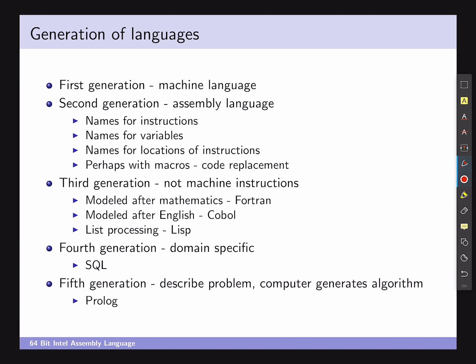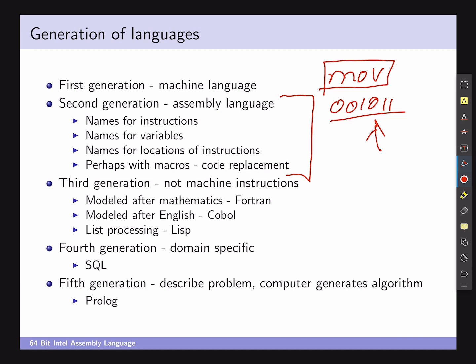So where does assembler programming fit into the generation of programming languages? Assembler language is referred to as the second generation of programming languages — basically just one step up from raw machine code. The upside is that you have names for instructions as mnemonics, like 'move' rather than a specific combination of binary. The same applies to using labels for variables. The third generation is pretty much what you spend most of your time programming in — C++, Java, and languages like Fortran, COBOL, and LISP fit into that generation. Fortran, surprisingly, is still quite prevalent among physicists as a very fast language to implement in.